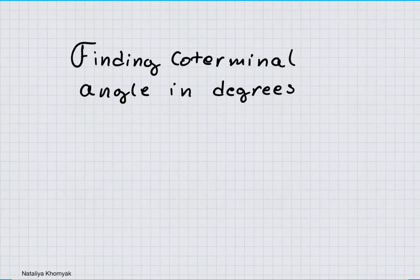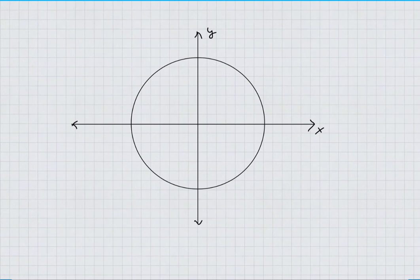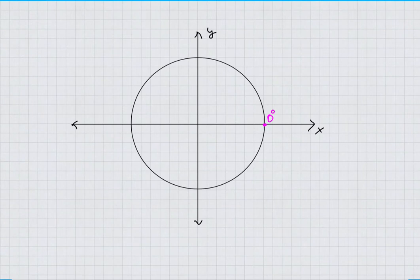Hi all! In this video we are going to be finding coterminal angles in degrees. If you take a look at the x and y-axis, all of the angle measures begin here. It's zero degrees — that is your starting point on the positive side of the x-axis.